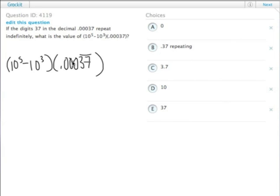It's easier if you distribute the 0.00037, unpack this so that it ends up being 10 to the fifth times 0.00037 repeating minus 10 to the third times that same number.